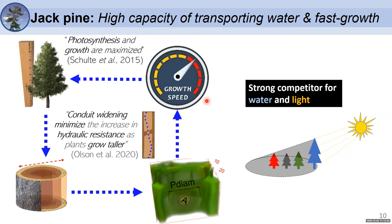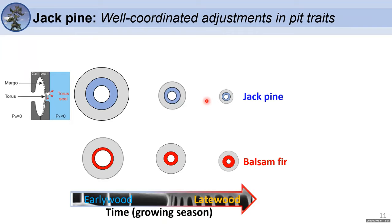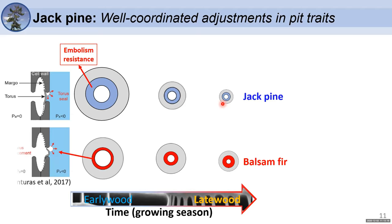Jack Pine is therefore proposed to be a stronger competitor for water than for light. Analyzing pit traits — torus and pit aperture — Jack Pine maintains well-coordinated pit traits, keeping high torus overlap regardless of the time in the growing season, whether in early wood or late wood. This does not happen with Balsam Fir, which appears more prone to torus displacement. Additionally, Jack Pine has more space in its pit structure, reducing resistance to water flow.